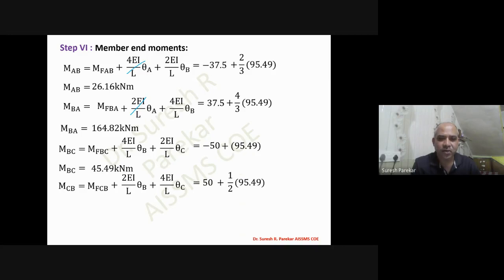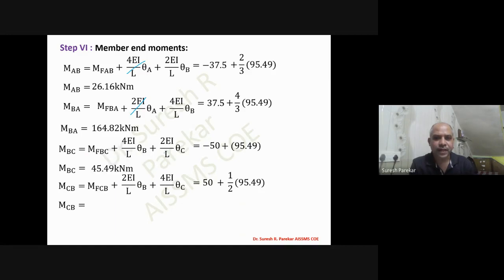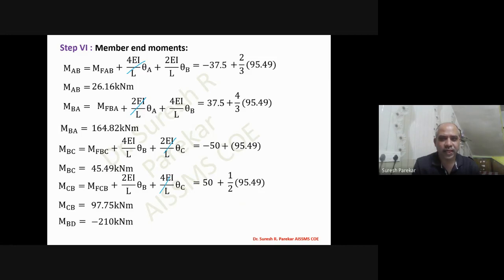For M_CB, θC = 0, so the term (2EI/L)·θC becomes zero, leaving only two terms. Substituting, M_CB = 97.75 kN·m. M_BD = minus 210 kN·m. We now have all final moments.